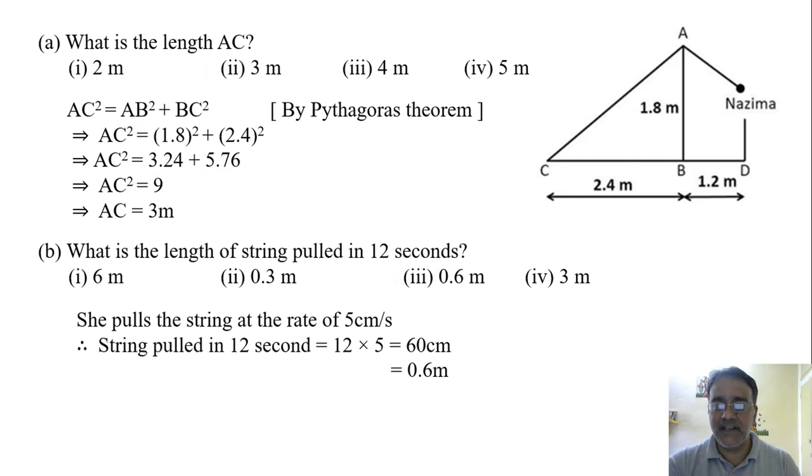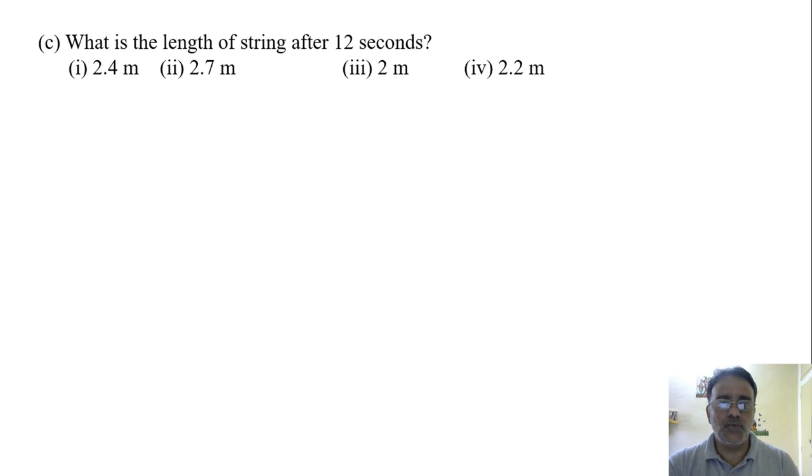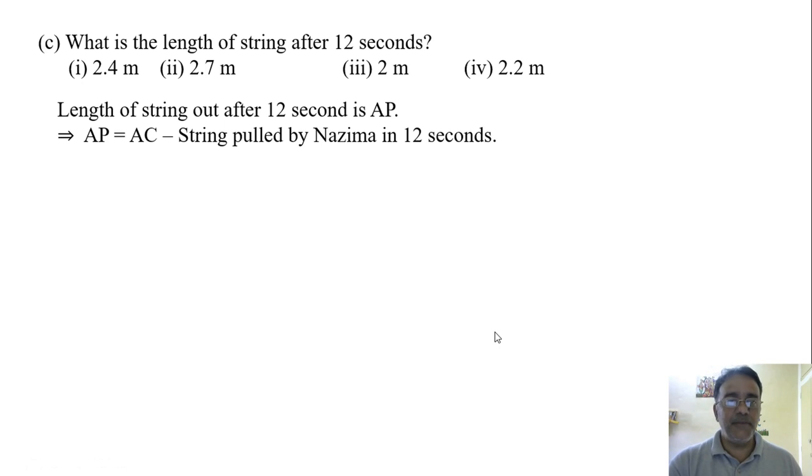Next question is what is the length of string after 12 seconds? Now we have seen that the length of string pulled in 12 seconds is 0.6 meter. And the length of string before pulling was 3 meter. 0.6 meter was pulled. So the length of string after 12 seconds is suppose AP.